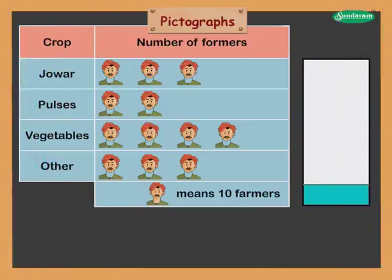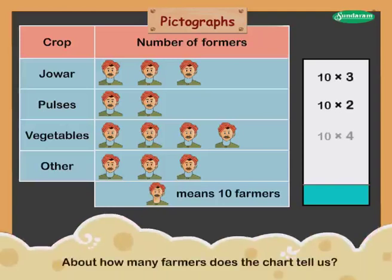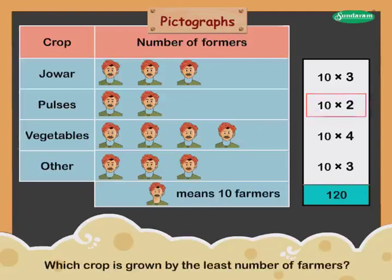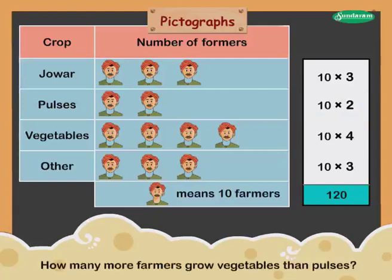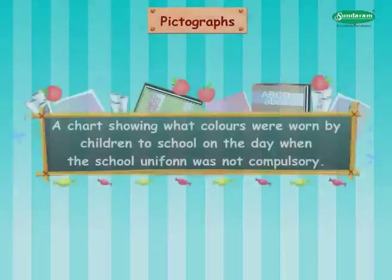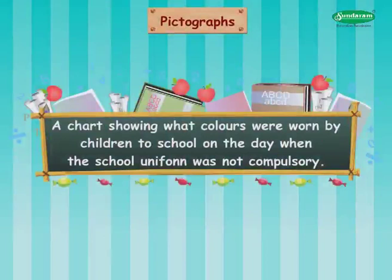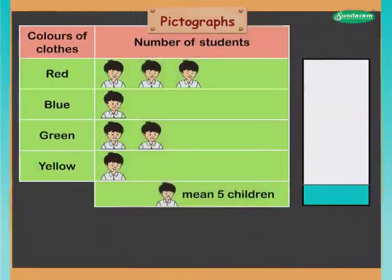Let us look at one more example — a chart showing the crops grown by farmers in a village. Crops include Jowar, Pulses, Vegetables, and Others. Scale: one picture of a farmer means 10 farmers. The chart tells us about 12 × 10 = 120 farmers. The least number of farmers grow pulses. 2 × 10 = 20 more farmers grow vegetables than pulses.